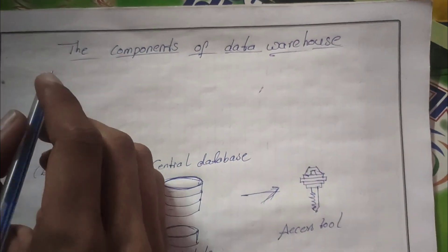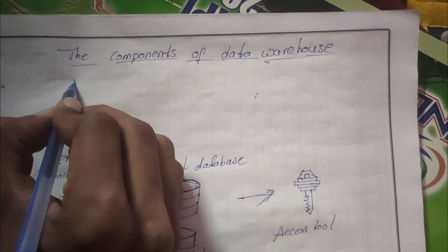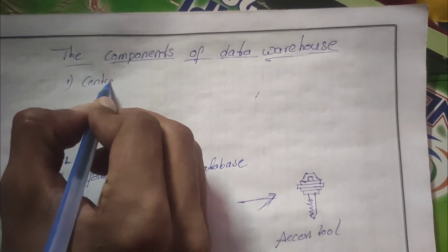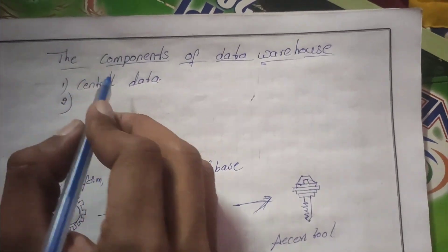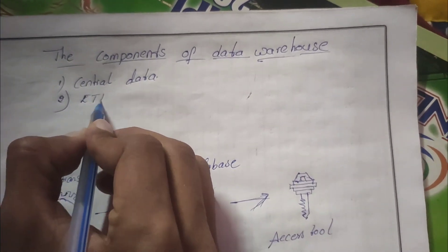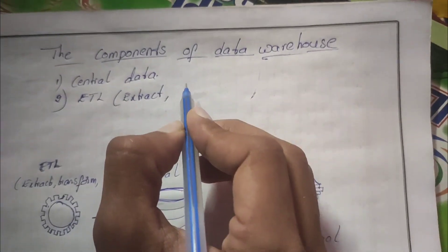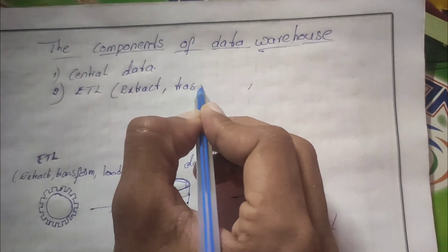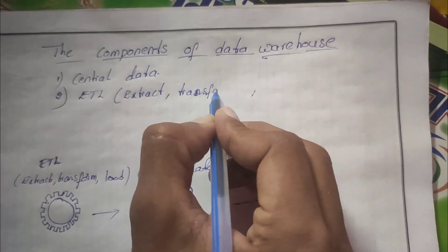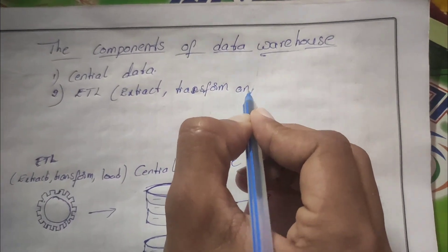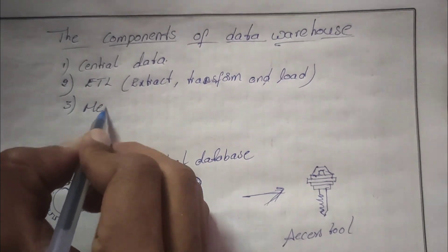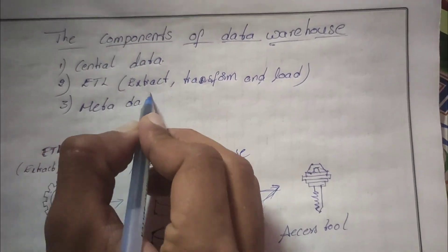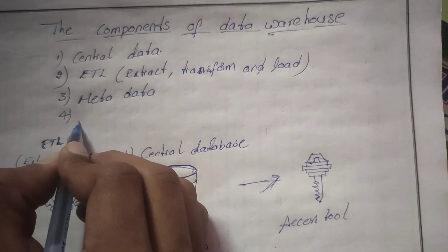Typically there are four components of a data warehouse. The first one is the central database. The second is ETL, that is Extract, Transform, and Load. The third is metadata, and the fourth is access tools.